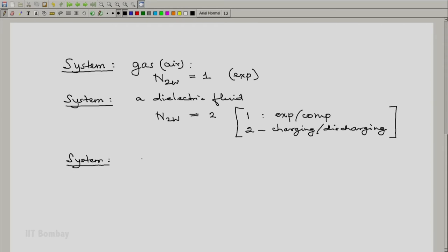It is also possible for a system to have zero number of two-way work modes. For example, if you take an incompressible liquid.